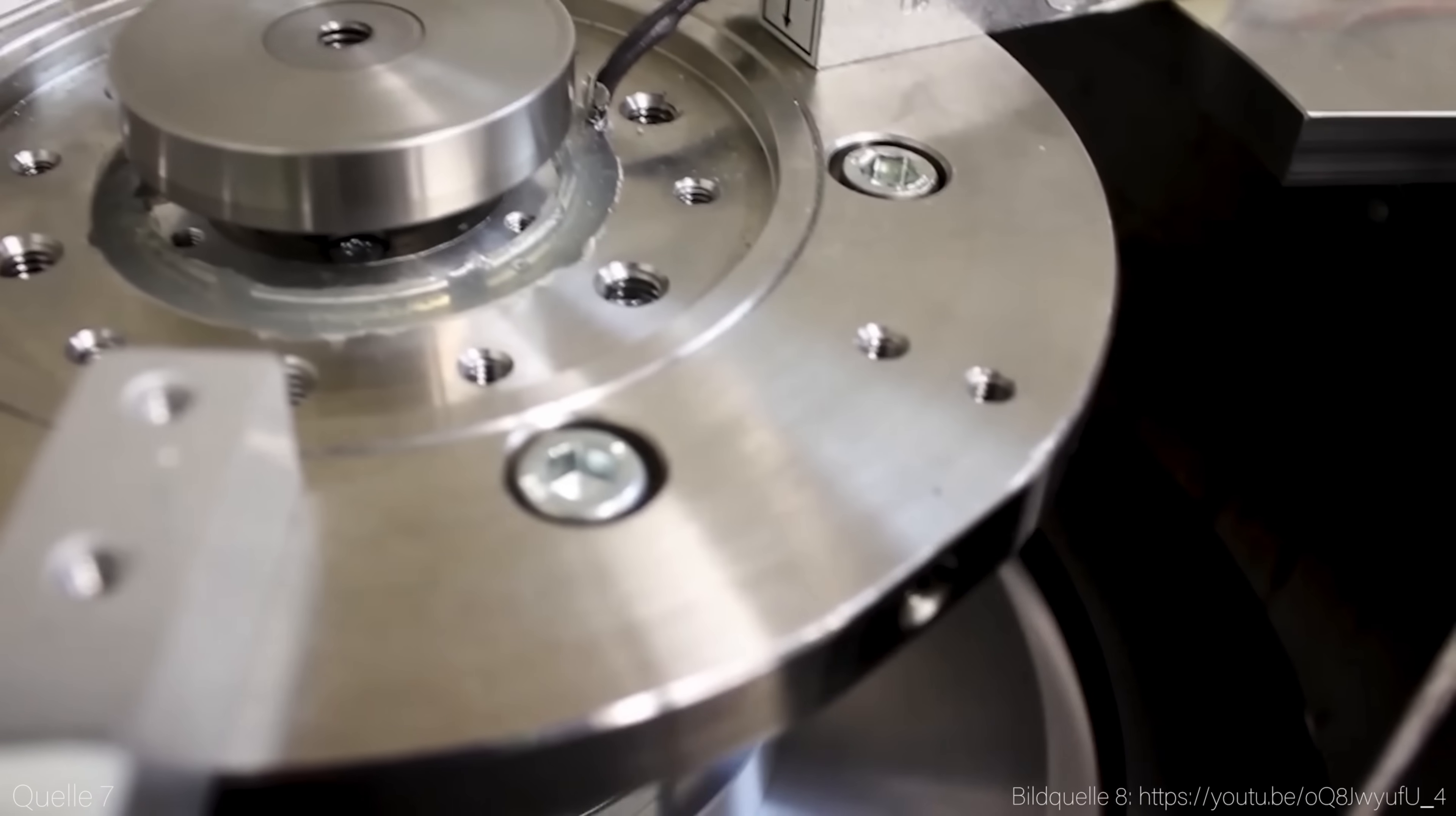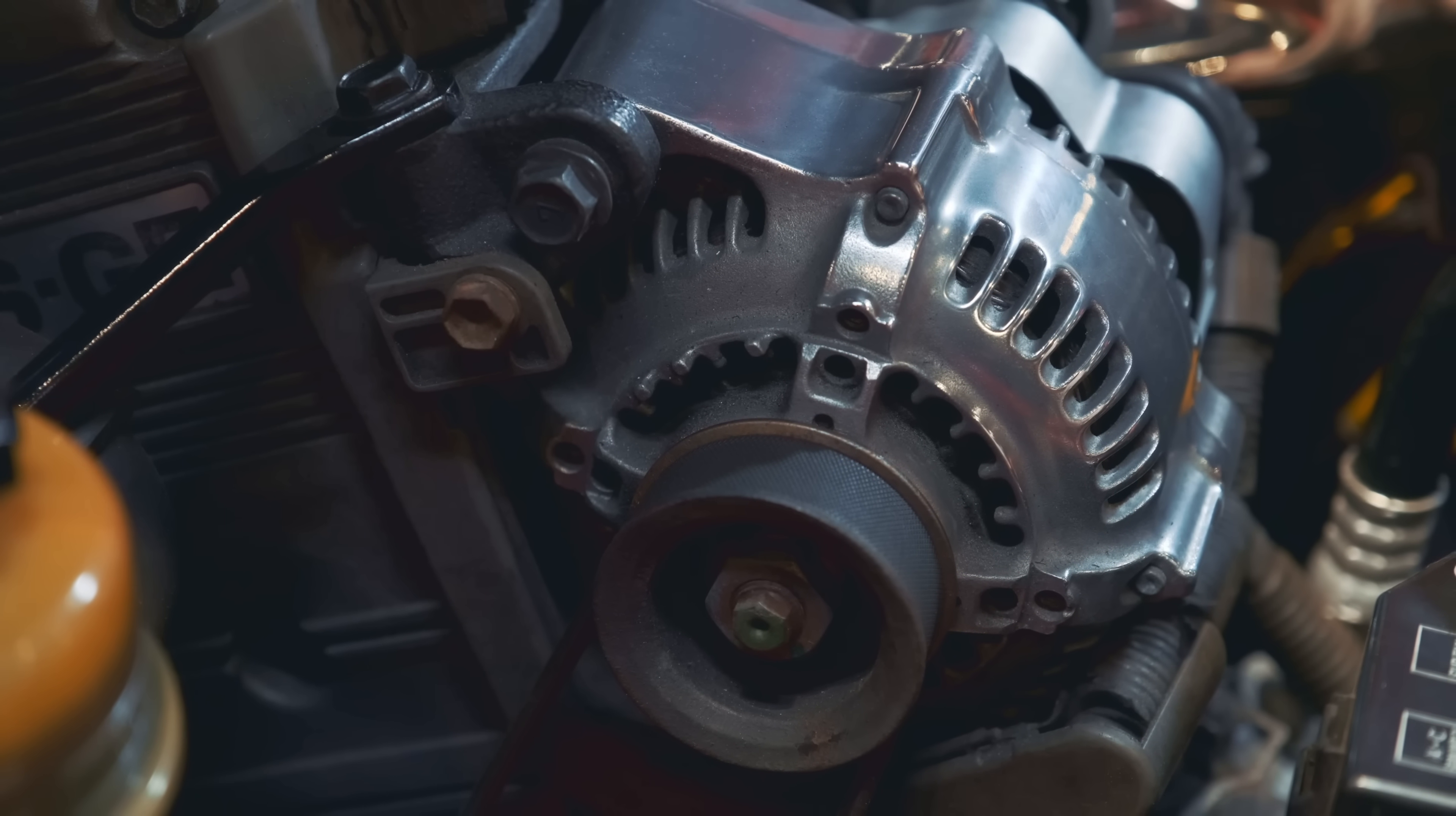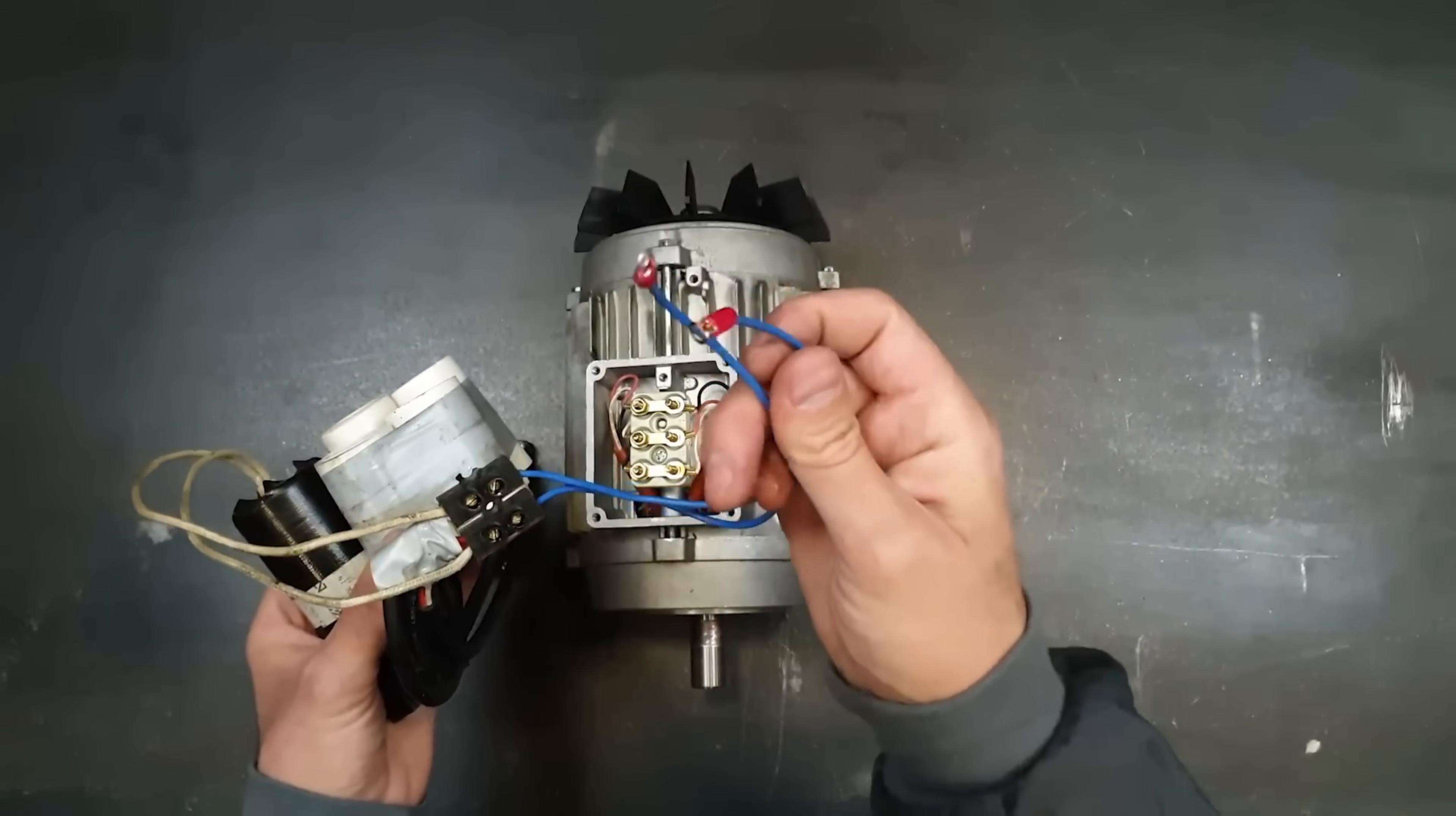But what if we had a generator that did not lose energy? Well, then we would have a perpetual motion machine of the first kind. A generator simply converts the kinetic energy that it receives into electrical energy that can be used at a one-to-one ratio.